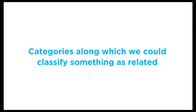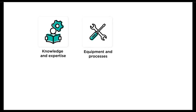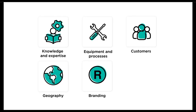First, let's think of some categories along which we could classify something as related. Does it use the same knowledge and expertise? Can we use the same equipment and processes? Are we selling to the same customers or distribution channel we already sell to? Are we selling into the same or different geographic area? Can we use the same brands across the businesses? Are the business models highly similar or different? Or is cash really the only thing that the businesses share?